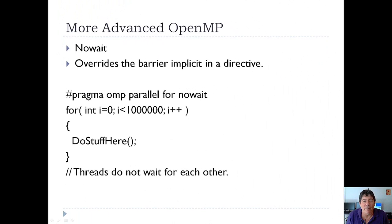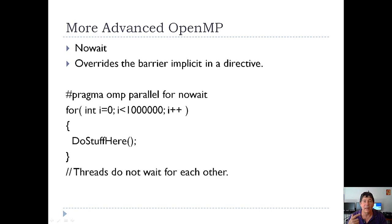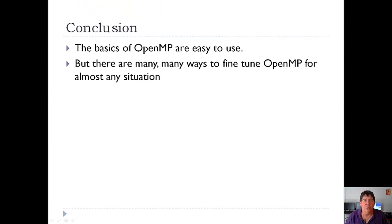The second advanced OpenMP feature I want to talk about is nowait. What this does is it overrides the barrier implicit in a directive. Normally with pragma OMP parallel for, OpenMP splits work into multiple threads, you go through the loop, and then there's a wait at the end so all threads synchronize and converge back together. But there are times when you don't want that — you just want to plow on without synchronizing threads, and for these cases you'll use the nowait clause. In conclusion, the basics of OMP are really easy to use, and there are many ways to fine-tune OpenMP for almost any situation you encounter.